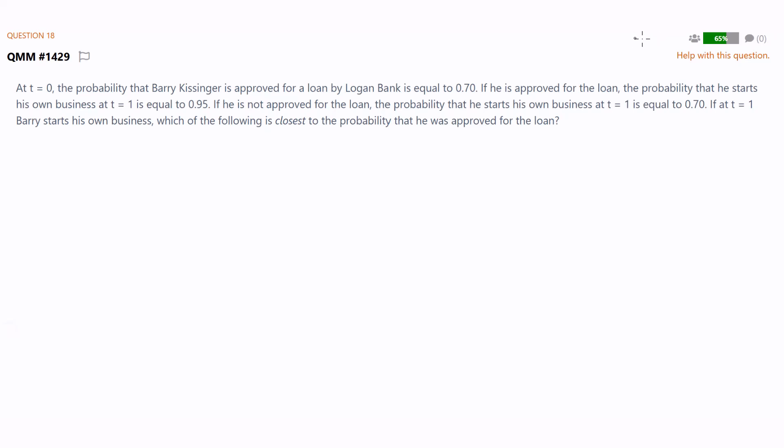This is a question from our QBank. I've not given you the three choices because I wanted to show the answer version and the percentage that got it right, but the answer is highlighted. 65% got this right - that's a pretty healthy percentage. Why? Because it is an absolutely down-the-middle, expected question on Bayes, and everything you need is absolutely flagged to you.